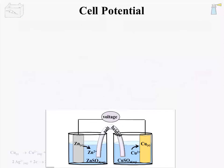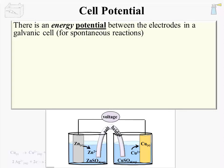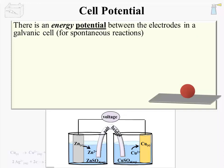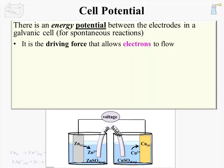Not all galvanic cells have the same capacity to push electrons along the circuit. That is where cell potential comes in. There is an energy potential between the electrodes in a galvanic cell — that is, for a spontaneous reaction. We are familiar with the term potential when dealing with gravity: a ball suspended above some surface has potential energy due to gravity, and that potential energy is converted into kinetic energy when the ball is released. In a galvanic cell, the energy potential is the driving force that allows electrons to flow along the circuit.